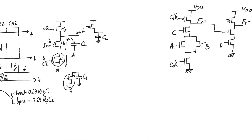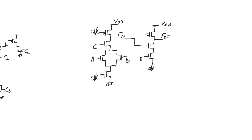Let's look at an example with two cascaded dynamic CMOS gates, where one loads the other. The logic function of the first gate is determined by its pull-down network: C·(A + B), all bar. The function of the second gate F2 is F1·D, all bar, since there must be a tail NMOS transistor included in the pull-down path.